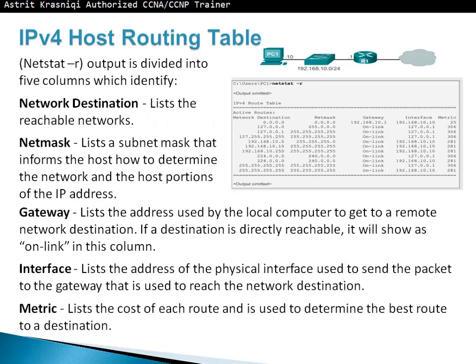The netstat -r output is divided into five different columns. First, network destination — a list of all reachable networks. Then netmask — a list of subnet masks that inform the host which portion is the network address and which portion is the host address. Then gateway — a list of all addresses used by the local computer to get to the remote network or destination. If a destination is directly reachable, it will show 'on link' in this column.